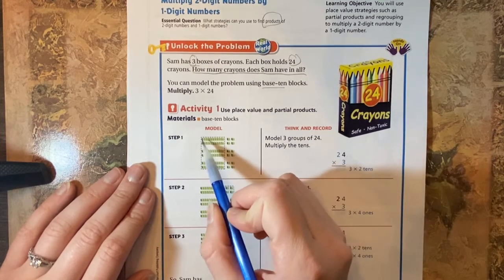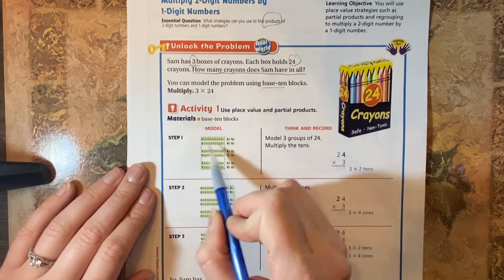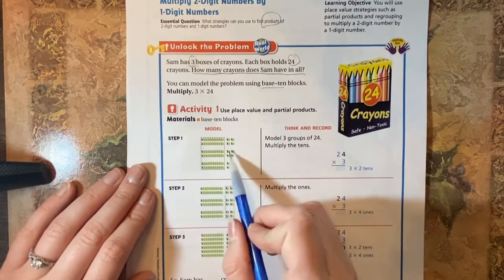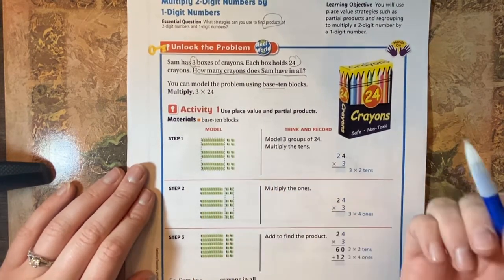So we're going to have this right here is two tens and four ones. So that's 24. We have three groups: two tens, four ones for each group. So we drew it all out and we're going to start with multiplying the tens.